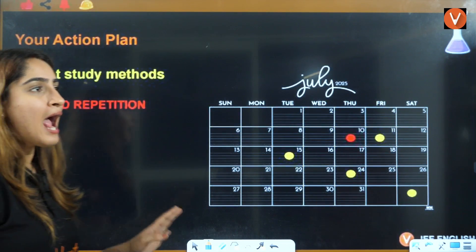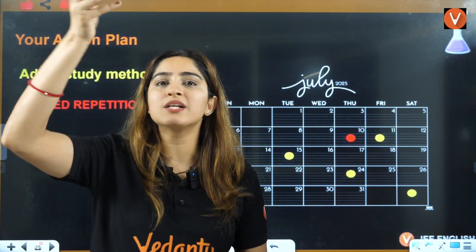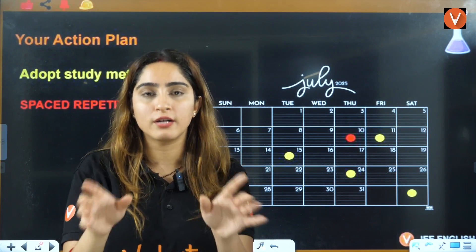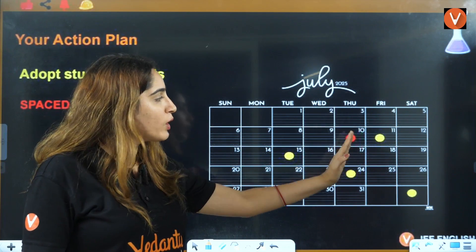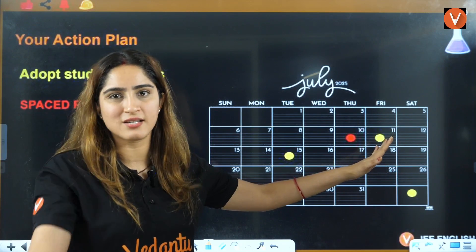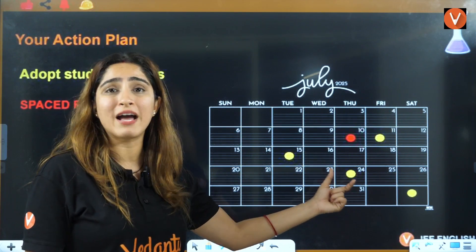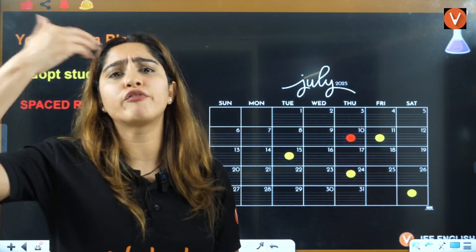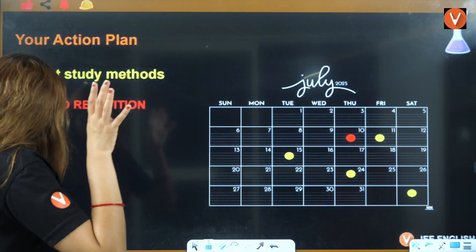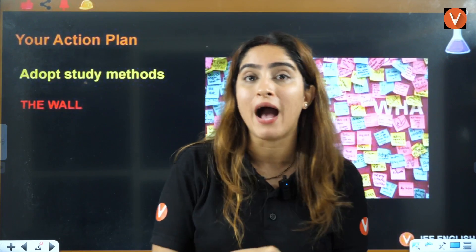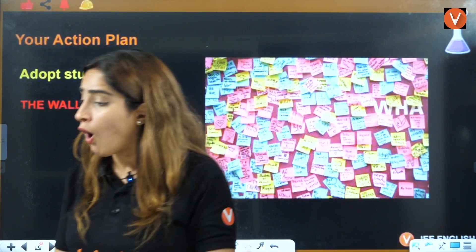You can also make mind maps, flashcards, and quick revision cards — these will really help. For revision, after covering a backlog chapter, don't forget it over two months. Revise it for 10 minutes the next day, then again after 3 days, after 6 days, after 9 days, after 15 days, and after one month. This spaced revision ensures the time you invested in covering your backlog actually turns into something beneficial.